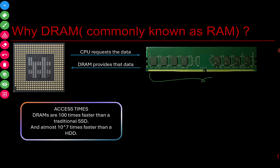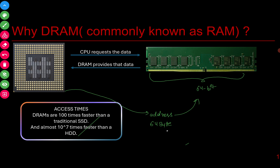The first technical detail is that the channel of DRAM is 64-bit, which means at a time 64 bits of data can be transferred from RAM to the CPU. When the CPU requests a particular address from DRAM, that address belongs to a chunk of 64 bytes — not 64 bits. DRAM sends 64-byte data by sending 64-bit data eight times, so accumulating 64 bits eight times gives us 64 bytes.